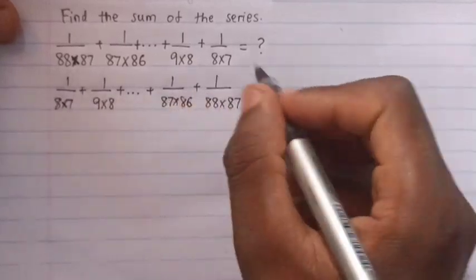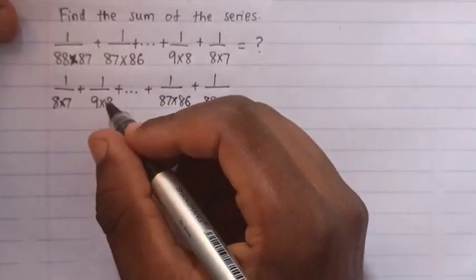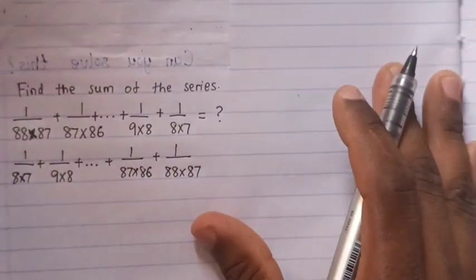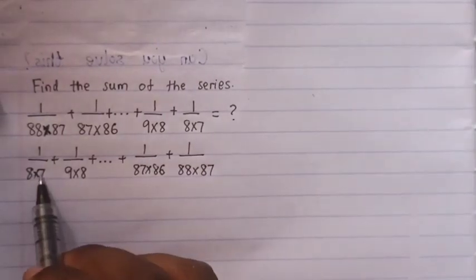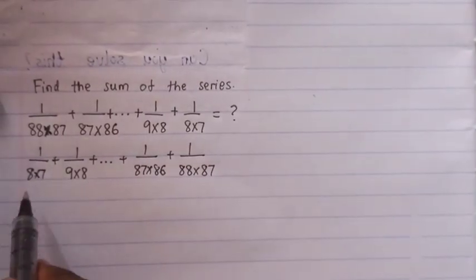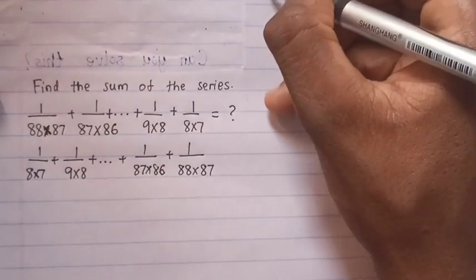Then, from this one, as we know, this one is same as, you see here, it's 8 times 7, 9, so it's like this.